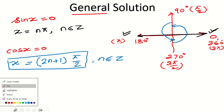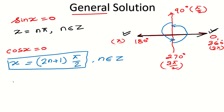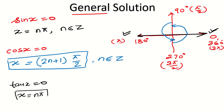Third, if tan x equals 0 — since tan x equals sin x over cos x, wherever sin x is 0, tan x will also be 0. So sin x and tan x have the same solution: x equals n pi, where n is an integer. These are the general solutions when the right-hand side is 0.